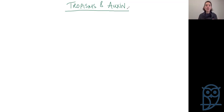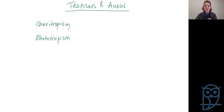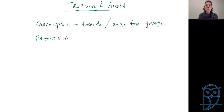Tropisms — we're talking about how plants move in response to something. We have gravitropism and phototropism. The key is in the names: 'gravi' is the first piece of the word gravity, so gravitropism is whether a plant is moving towards or away from gravity. Photo is always about light, so phototropism is movement towards or away from light.